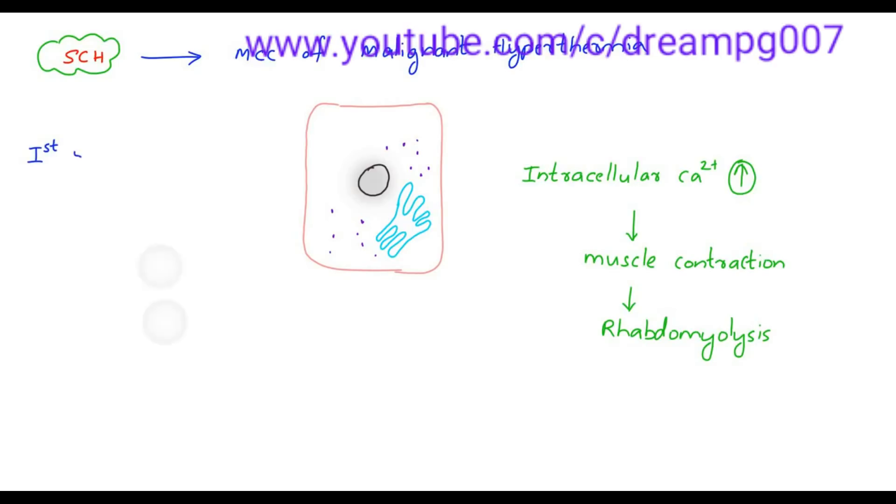First sign seen in malignant hyperthermia is increase in end-tidal carbon dioxide. Other features include masseter muscle spasm, increase in temperature, and tachycardia.